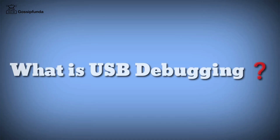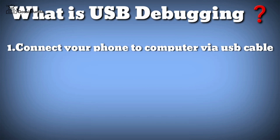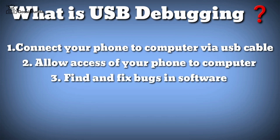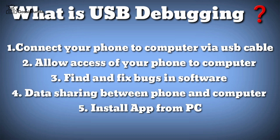First of all, what does USB debugging mean? USB debugging is a feature on your phone. It allows your device to connect to a computer with a USB cable and gives you access to your phone from a computer. With the help of USB debugging, you can find and fix errors and bugs on your device or any software on your device. This is mainly used for development purposes. You can also use it to copy data from your device to a computer and vice versa. It can also install apps on your device and can read log data.